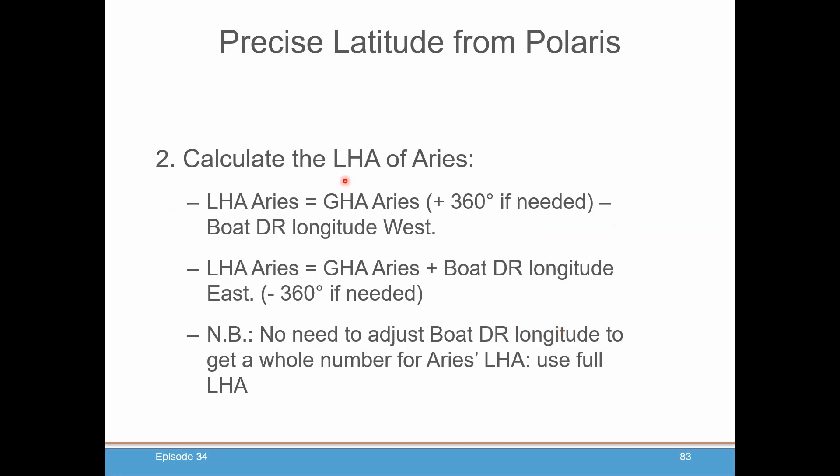Calculate the LHA of Aries. Now, what's unique about this particular calculation is you don't have to do any rounding. So you want to calculate the exact LHA of Aries, which is the GHA of Aries. You may have to add 360 possibly, and subtract your boat DR longitude if you are west, or add your boat DR longitude if you are east. Again, no need to adjust the boat DR longitude to get a whole number. You want the exact full LHA.